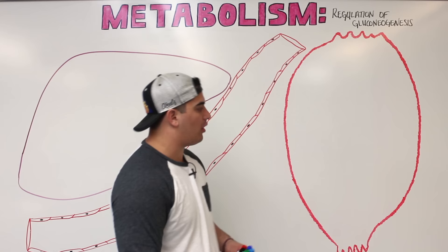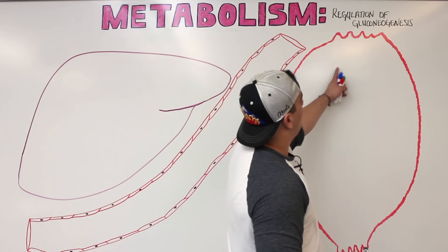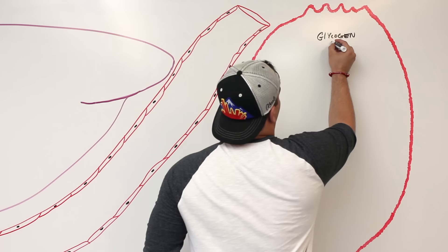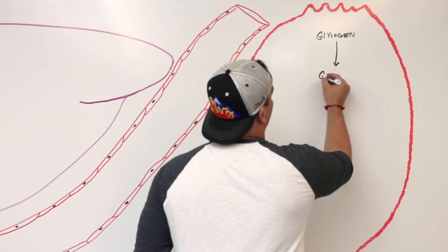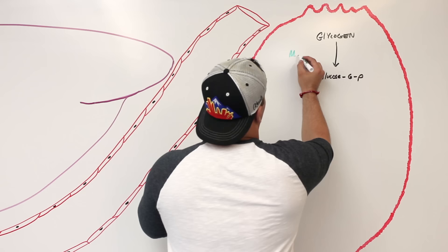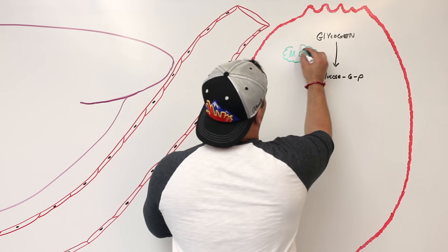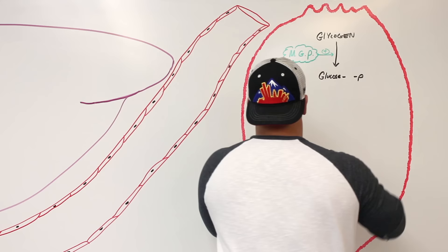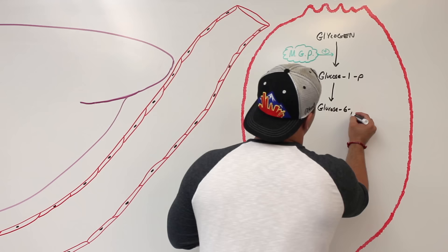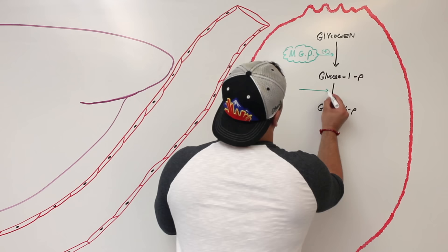The first cycle is the Cori cycle. In the muscle, we have glycogen, and the enzyme muscle glycogen phosphorylase converts that glycogen into glucose-1-phosphate. Then another enzyme, phosphoglucomutase, converts that glucose-1-phosphate into glucose-6-phosphate.